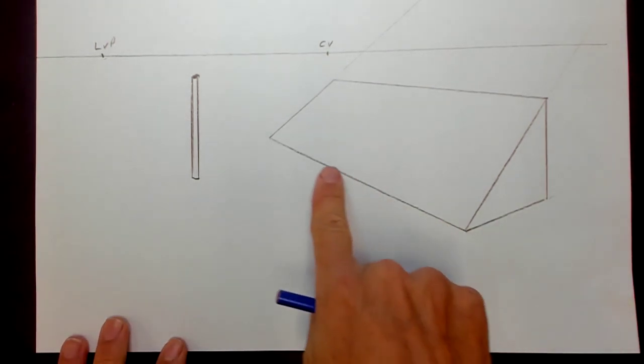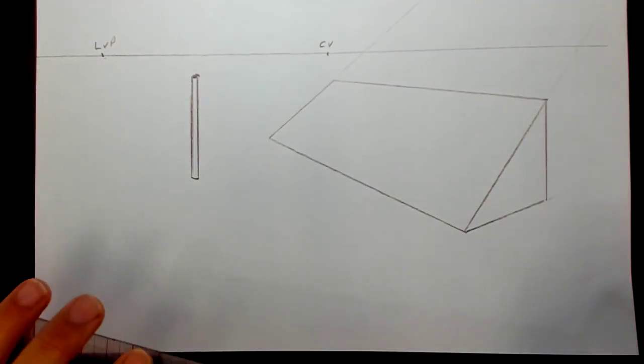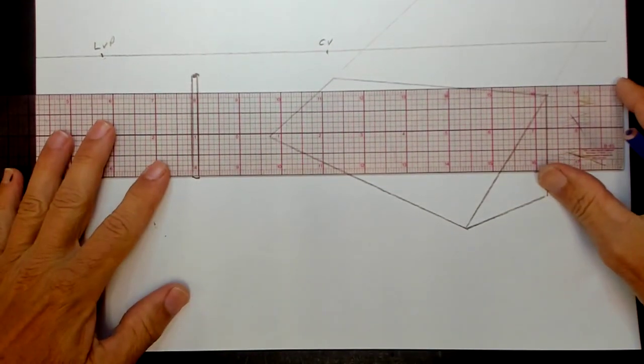This is a two-point perspective incline. See, these go to vanishing points—those auxiliary vanishing points we talked about many videos ago.